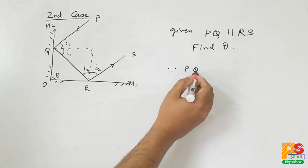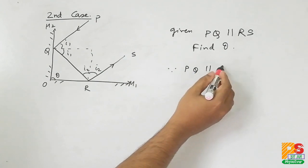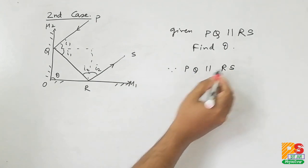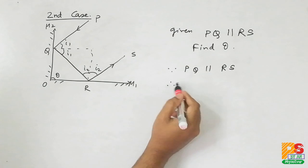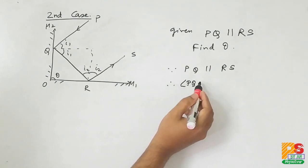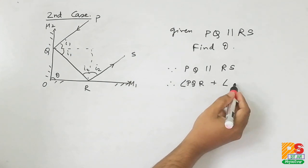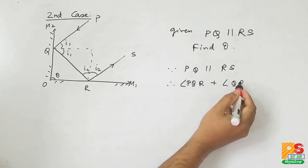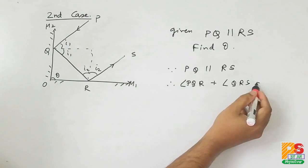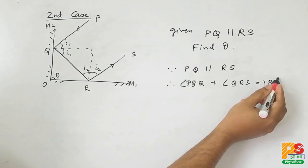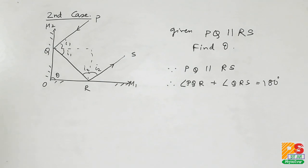Since PQ parallel to RS, we know that the sum of the two internal angles should be 180 degrees. That is angle PQR plus angle QRS equals to 180 degrees.